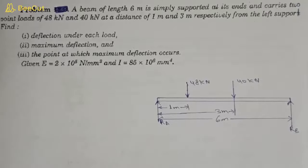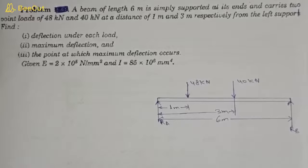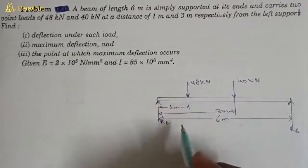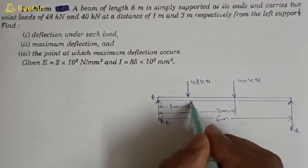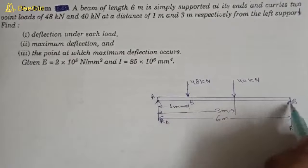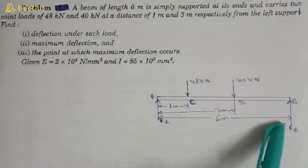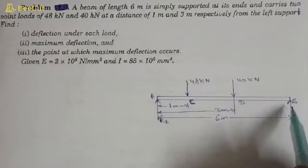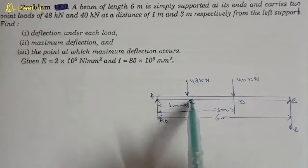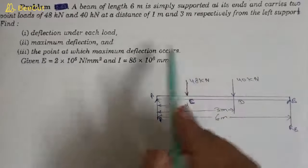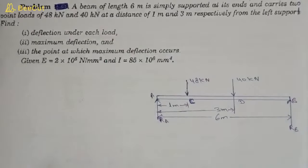Hello friends, welcome to my YouTube channel MacPN. In this video we will find the deflection at two points and maximum deflection in a beam using Macaulay's method. A beam of length 6 meters is simply supported at its ends and carries two point loads of 48 kN and 40 kN at distances of 1 meter and 3 meters respectively from the left support. We need to find the deflection under each load, the maximum deflection, and the point at which it occurs. Values of E and I are given.